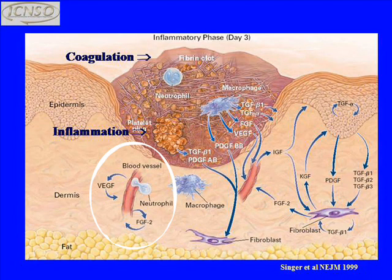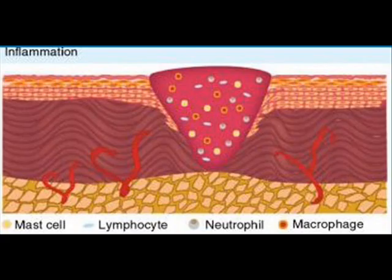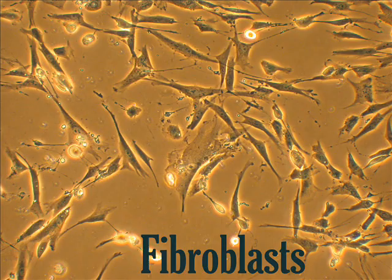Inflammation causes the blood vessels to become leaky, releasing plasma into the surrounding tissue. A super white blood cell called macrophage comes in to back up the other white blood cells. They are the second line of defense in the wound healing process. Macrophages also secrete a variety of chemotactic and growth factors, like fibroblasts, which start the rebuilding process involved in the third phase.